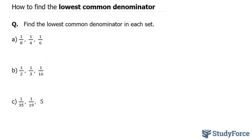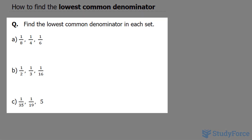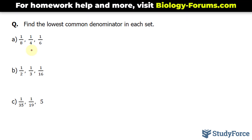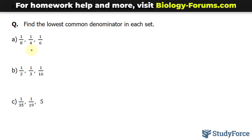In this quick video, I'll show you how to find the lowest common denominator. The question reads: find the lowest common denominator in each set. We'll start with question A. We have three fractions: 1 over 8, 1 over 4, and 1 over 6. Now it's important to mention that you can do this in several different ways. To keep things simple, I'll show you two methods that have always worked for me, and depending on the example, each has advantages over the other.